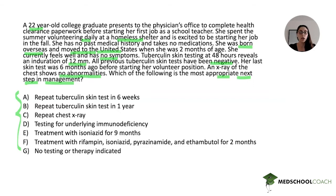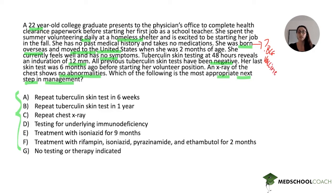In terms of risk factors for tuberculosis, there are a few in the stem we should note. First, this patient was born overseas — whenever you see that, it may be a clue that the patient received the BCG vaccine, which is routinely given at birth in many countries. However, it's not explicitly stated, so we don't know for sure, but we should consider whether she received the BCG vaccine. It may be a red herring, or it may be relevant to our answer choices.